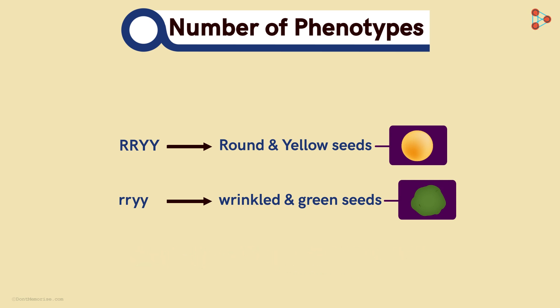Let's crack this together! The first thing we need to note is that we are looking at two characters! Seed shape and seed colour! We are crossing this plant with the one having wrinkled and green seeds! So isn't this a dihybrid cross? Yes it is!